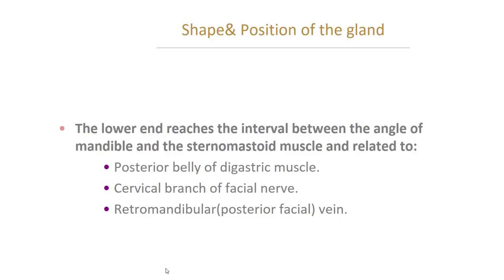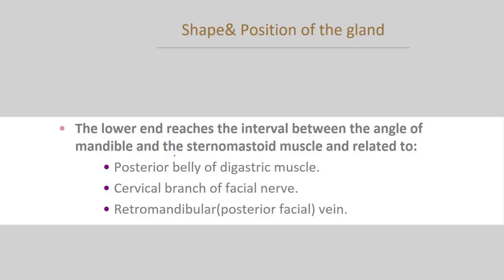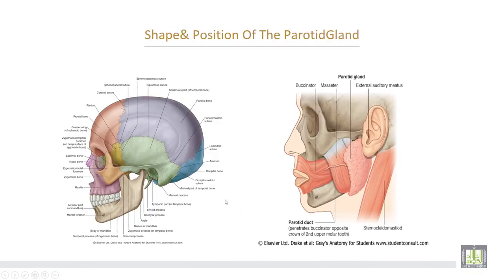The lower end reaches the interval between the angle of the mandible and the sternomastoid muscle, and is related to: number one, the posterior belly of the gastric muscle; number two, the cervical branch of the facial nerve; number three, the retromandibular or posterior facial vein. The parotid gland has an upper end, a lower end, anterior and posterior borders, and an outer surface.